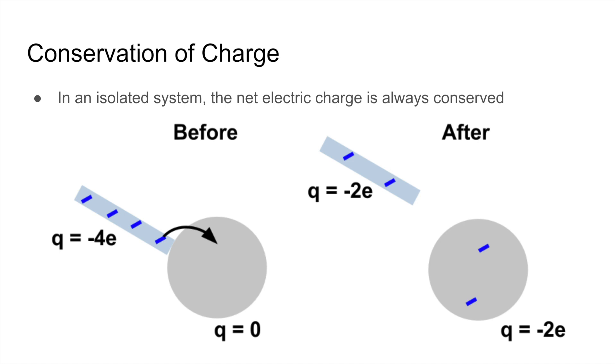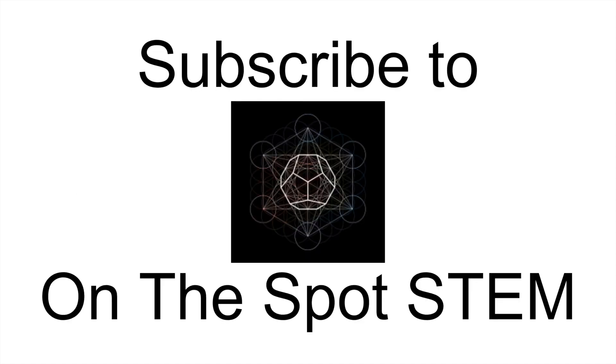If we consider the system, the rod, and the sphere, and we assume that no charges flow in or out of the system, we see that if the rod started off at negative 4e of charge, and it ended up at negative 2e, we can easily find, due to the conservation of charge, the charge on the sphere.